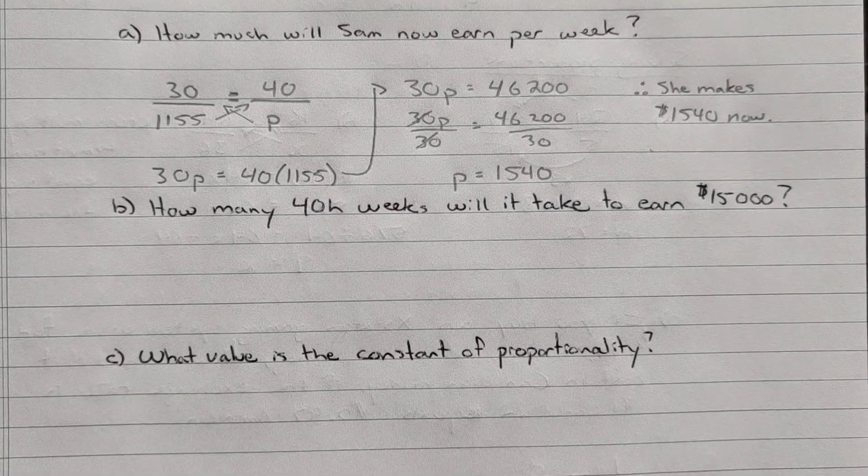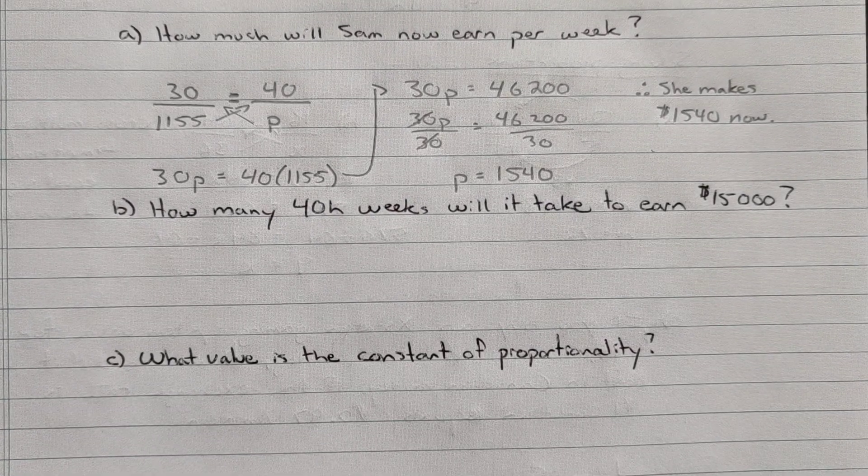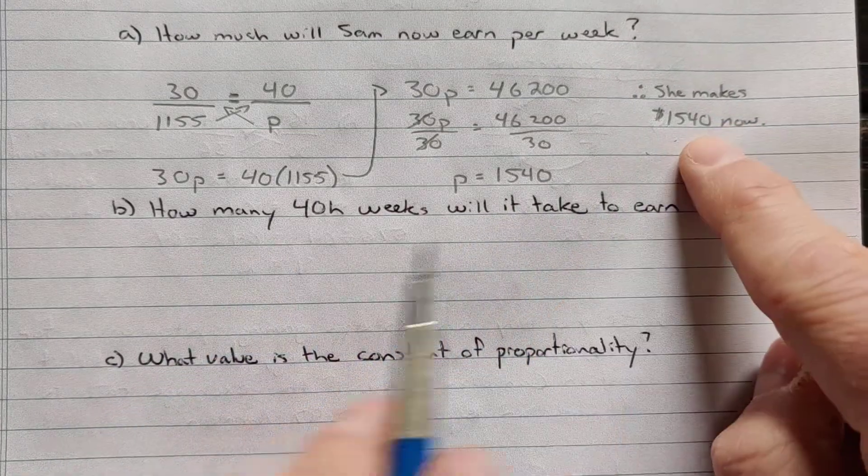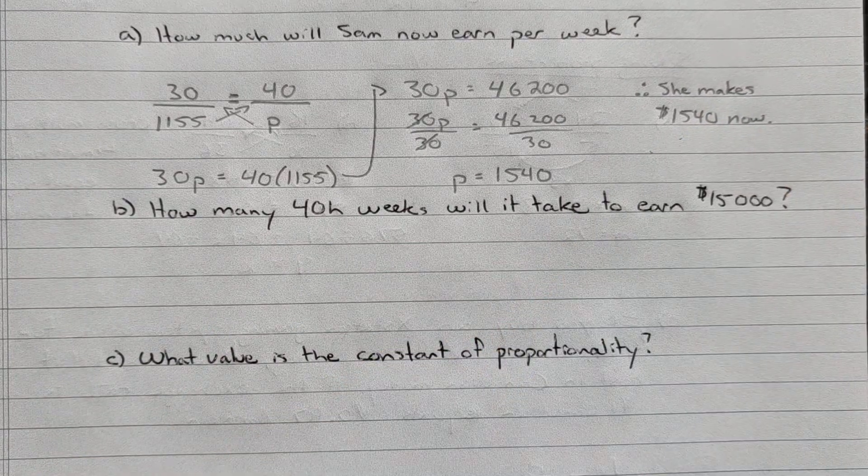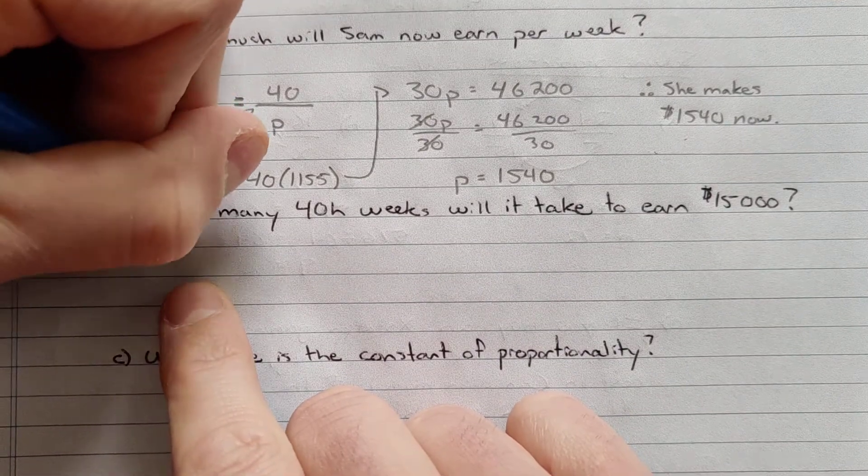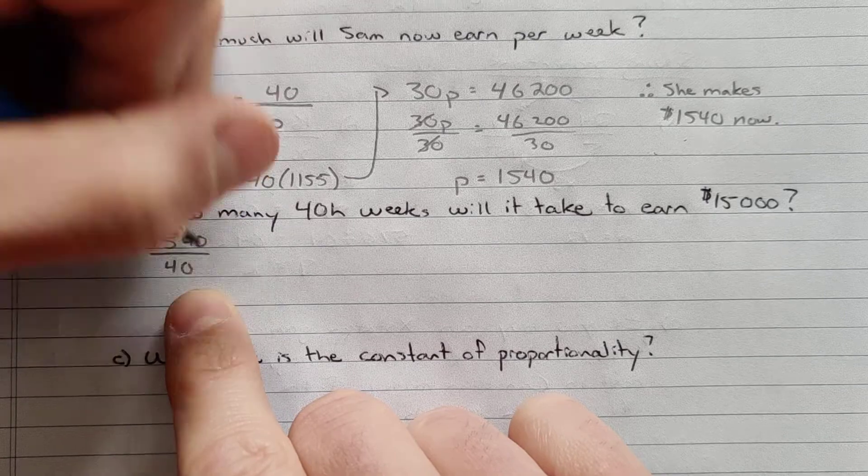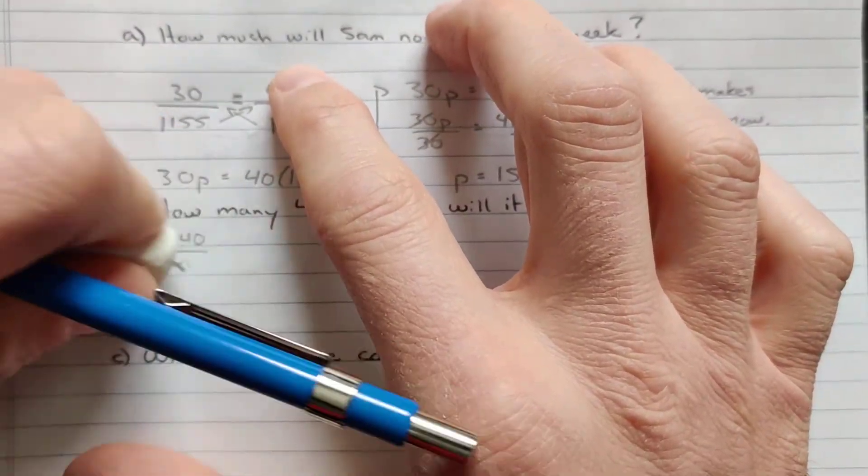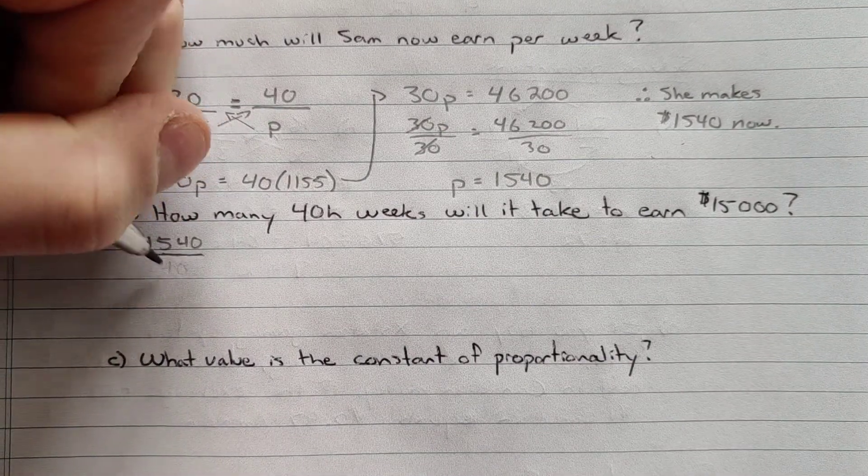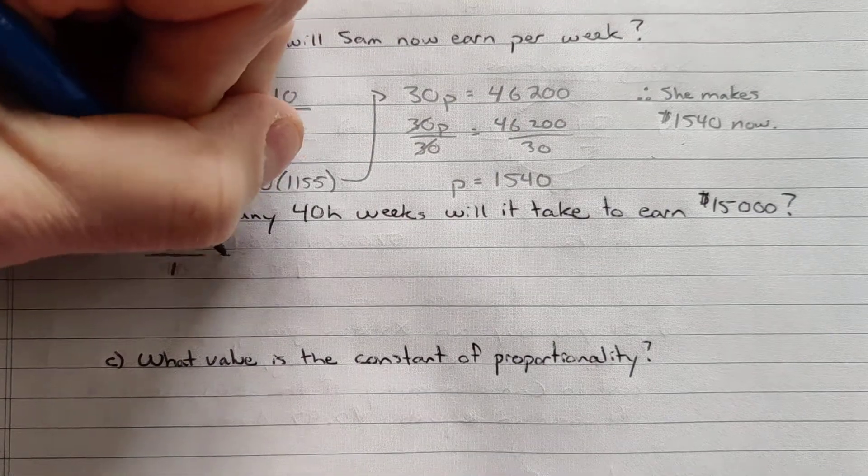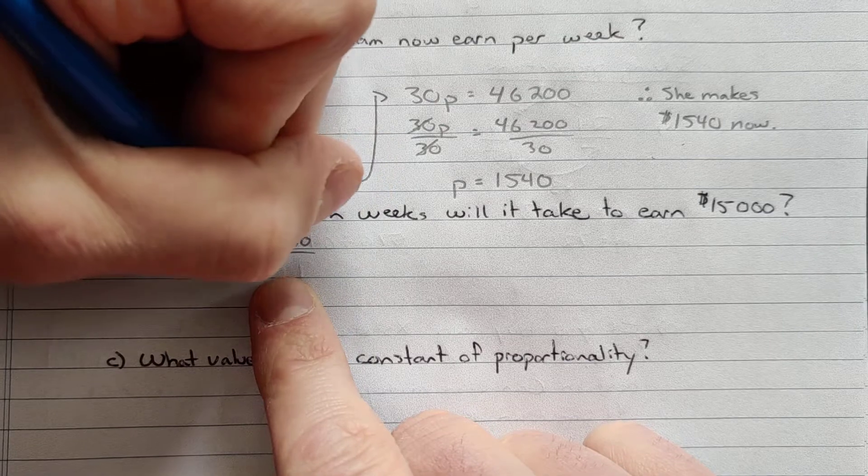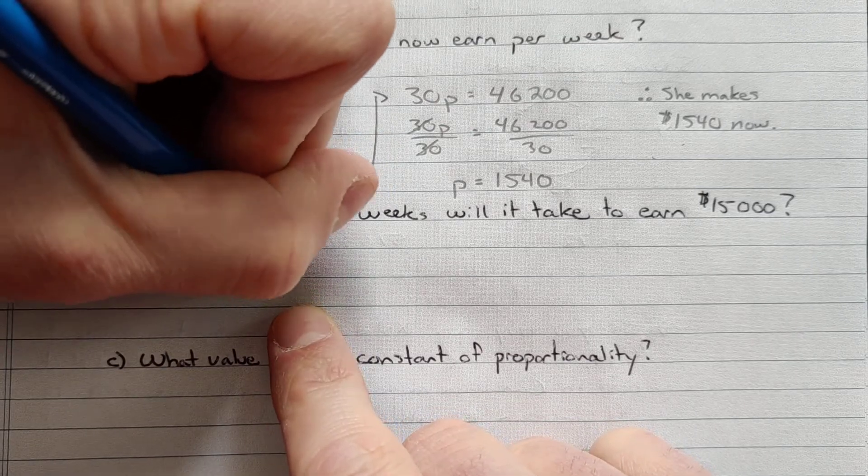Now the next part says how many 40 hour weeks will it take to earn $15,000? Well, here's our proportion for 40 hours. So for 40 hours she makes $1,540. So she's making $1,540 in 40 hours per week. So now we're changing to weeks. So how many weeks will it take? So that's per one week. And that's going to equal $15,000 and the number of weeks.